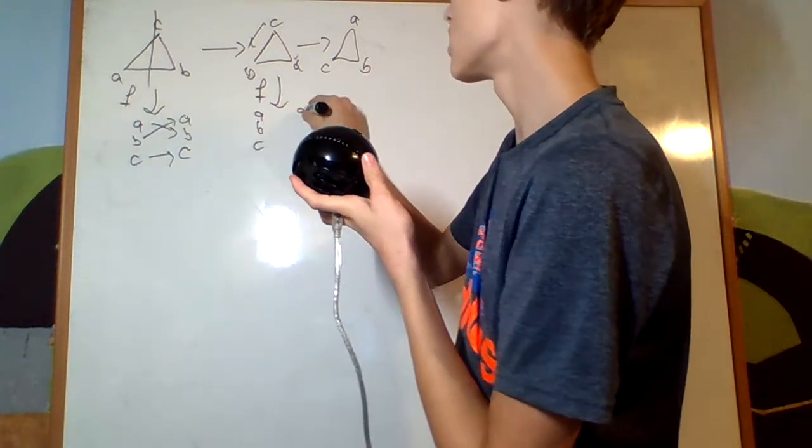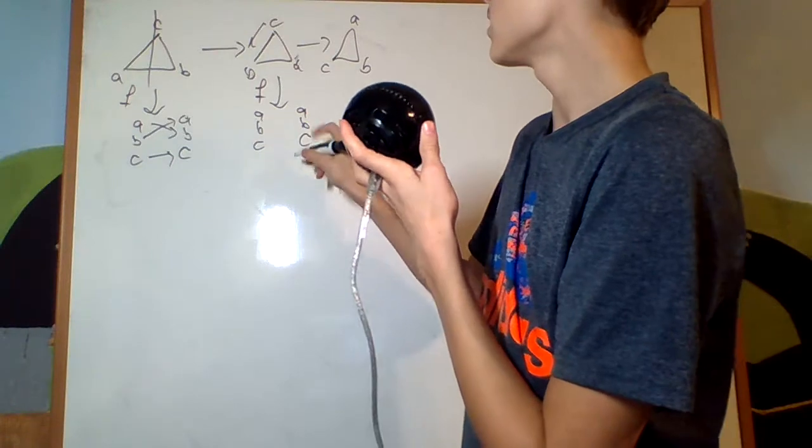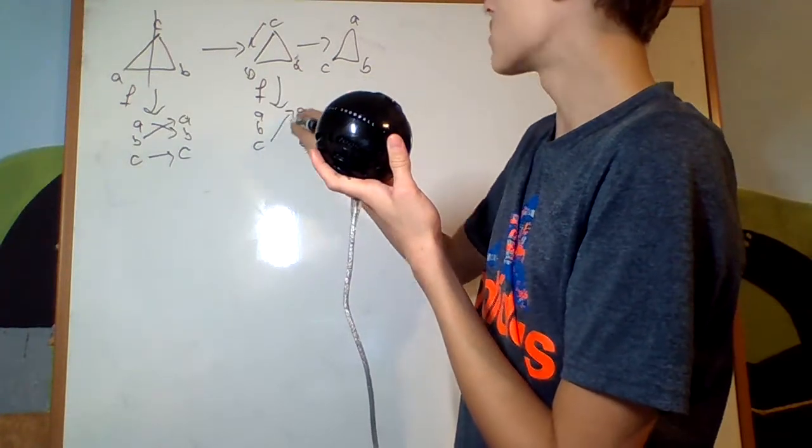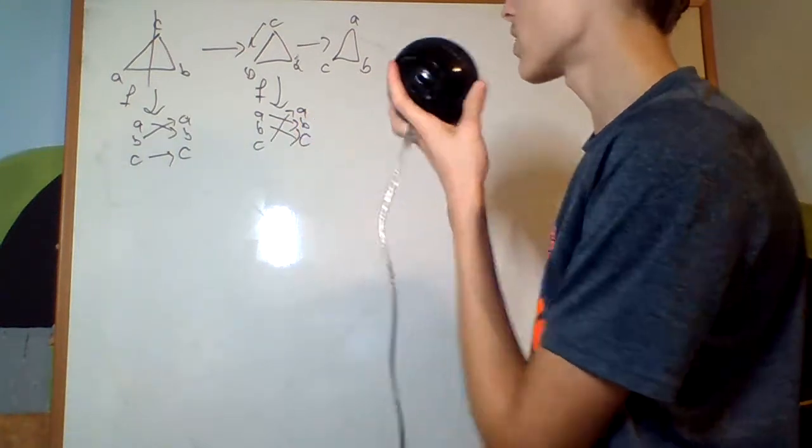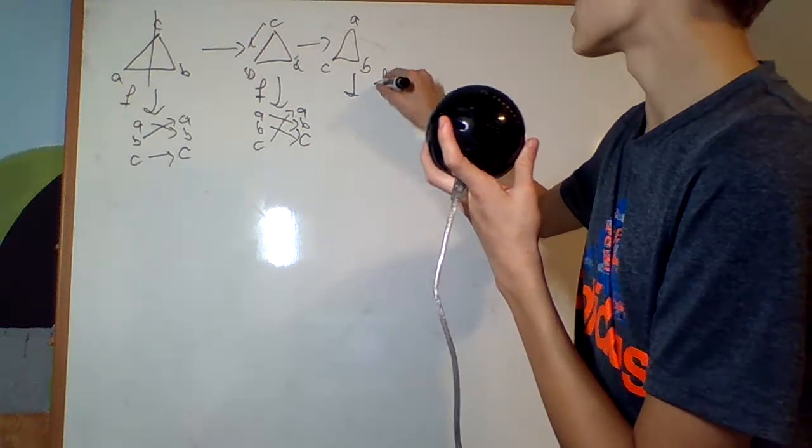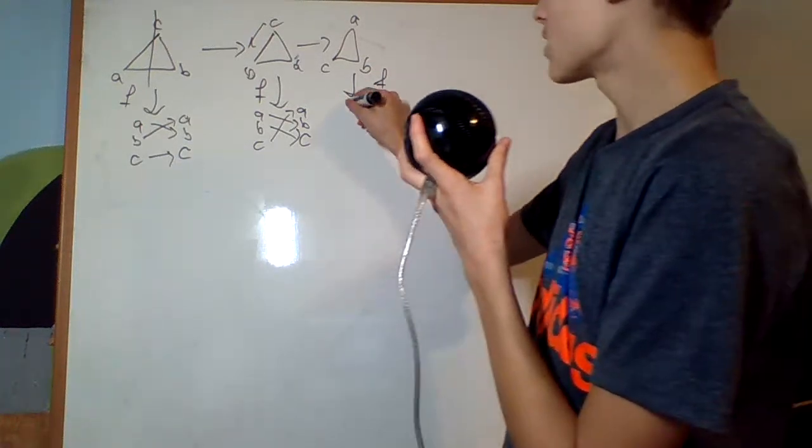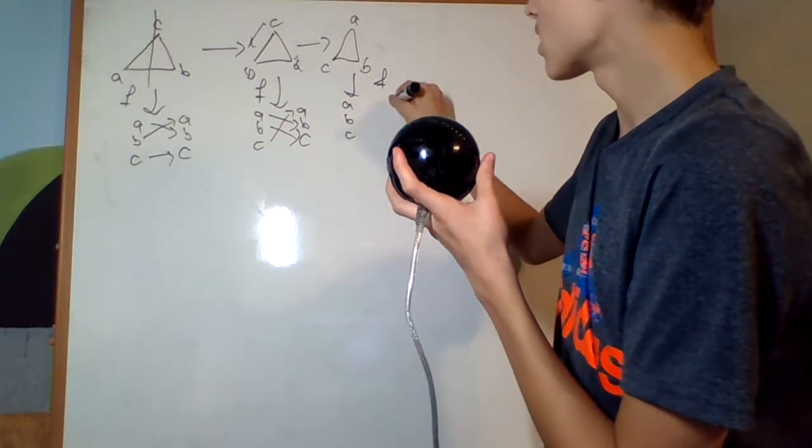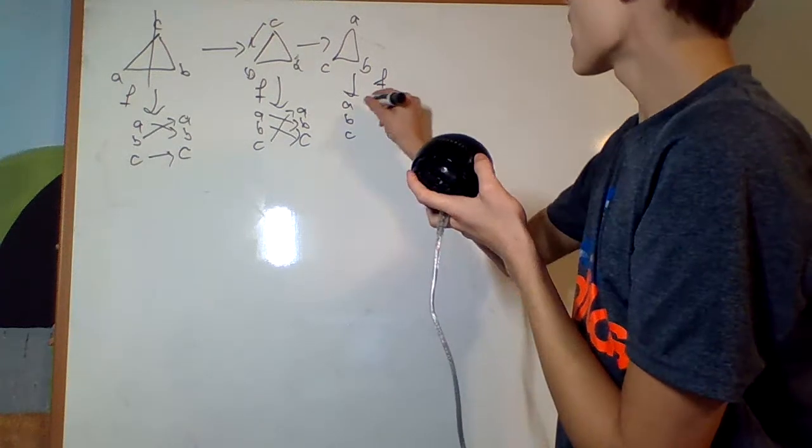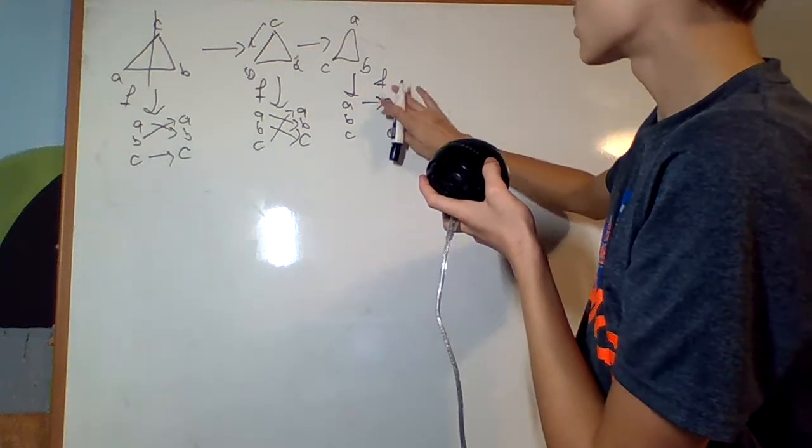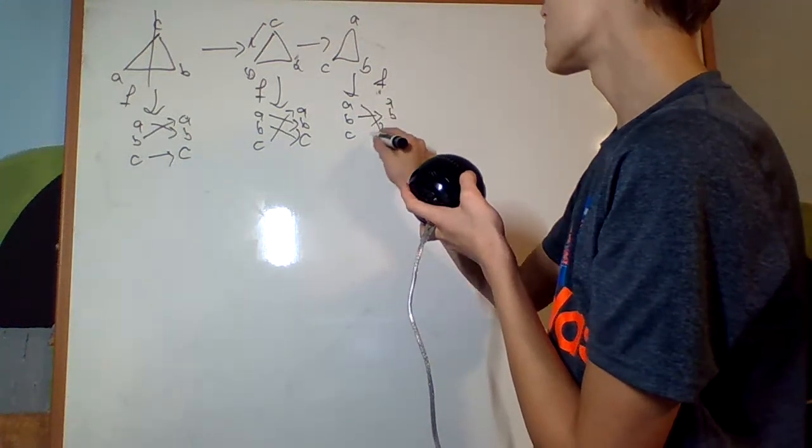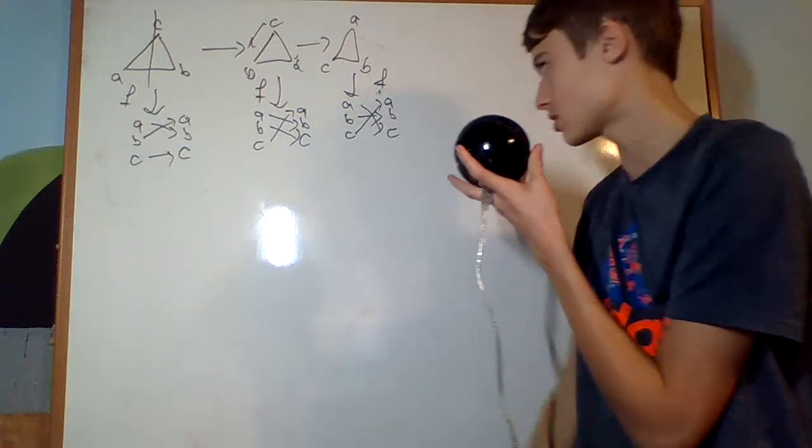This is the mapping bringing C to A's position, A to B's position, B to C's position. And then if I imagine doing it for this one as well, I get the mapping. You can see that B is fixed here. A and C have switching positions.